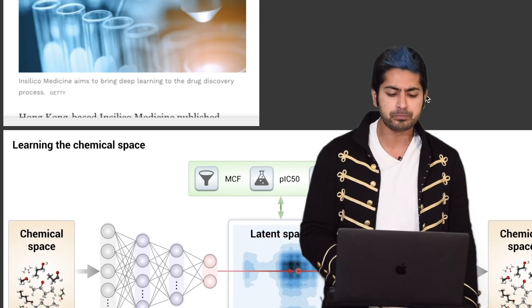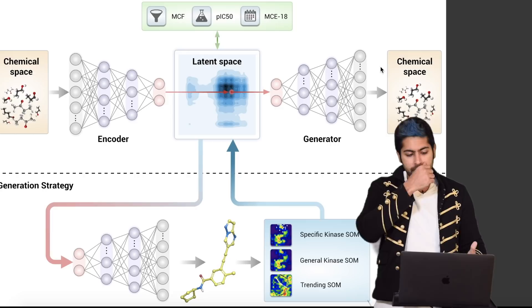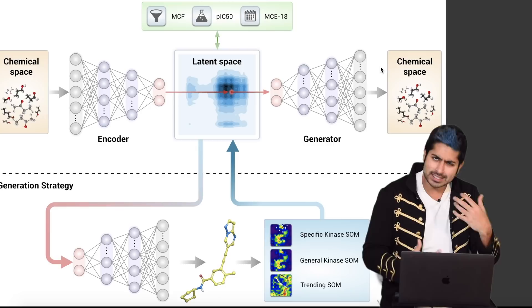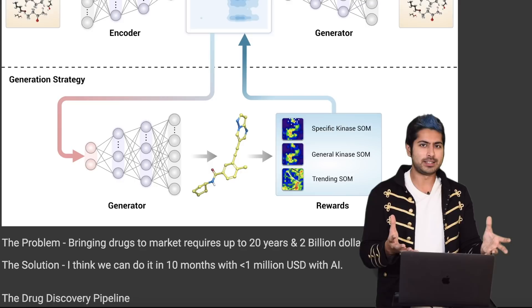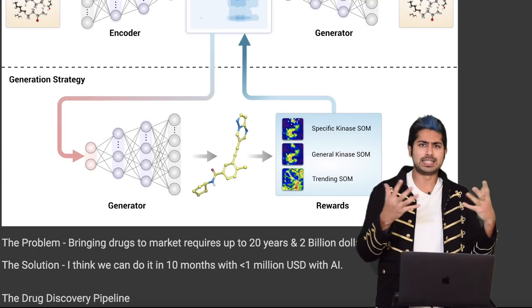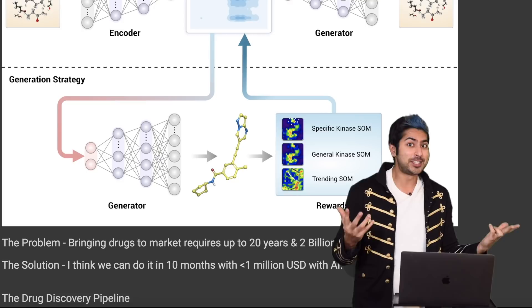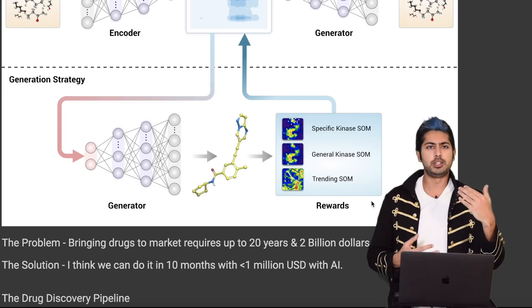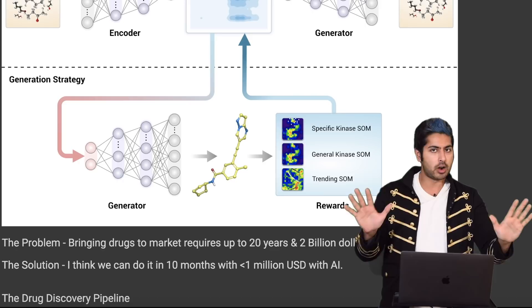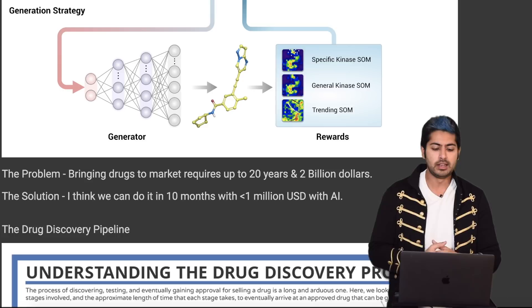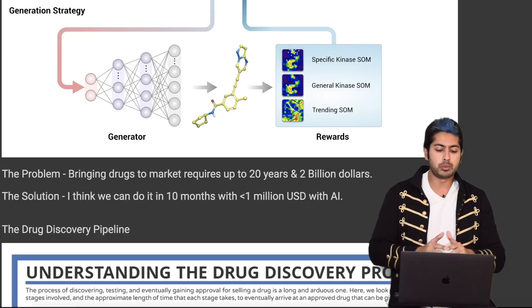Their model architecture uses a self-organizing map as a reward function for the reinforcement learning environment — which raises two big questions. First, why use reinforcement learning if there's no time-based environment? Second, who uses self-organizing maps these days? They're older theory you don't really see in production — just interesting thought experiments. But they do good work. The problem is that bringing drugs to market requires up to 20 years and two billion dollars, and with AI we could potentially do this in 10 months for under one million USD.